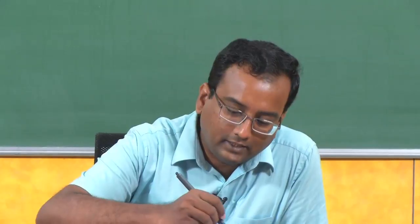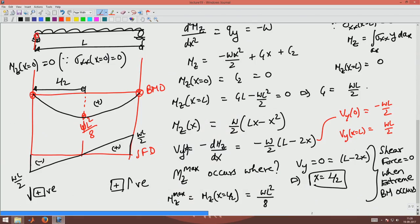What it means is from force equilibrium you can see that this reaction force should be W into L by 2 and this reaction force should be W into L by 2 both acting vertically upwards. So the beam is symmetric, we expect the reaction forces to be symmetric same. Now we have found the bending moment and shear force. Next let us find the stresses, forces and displacements.